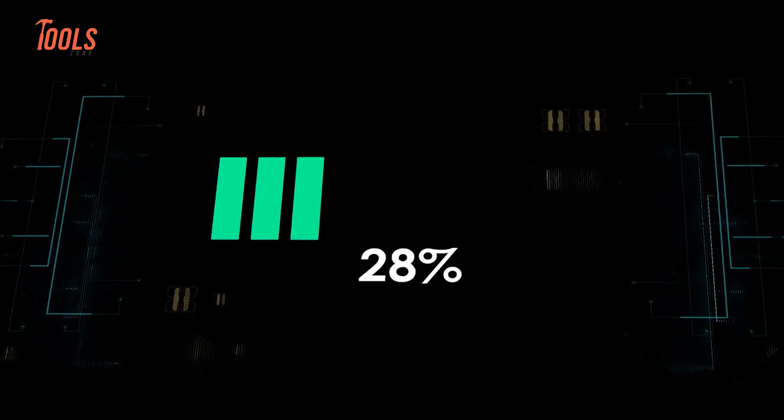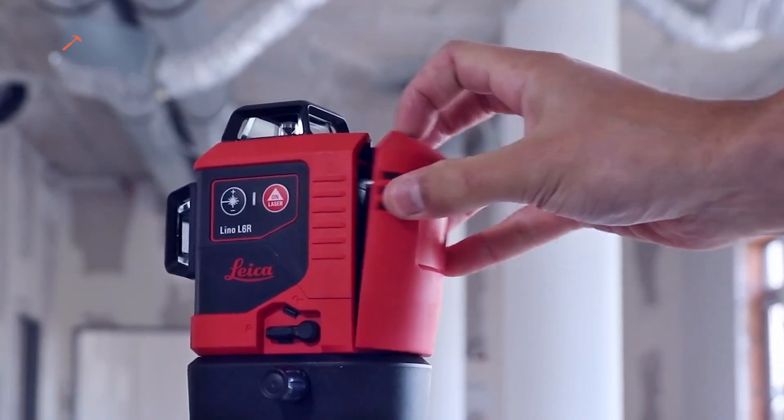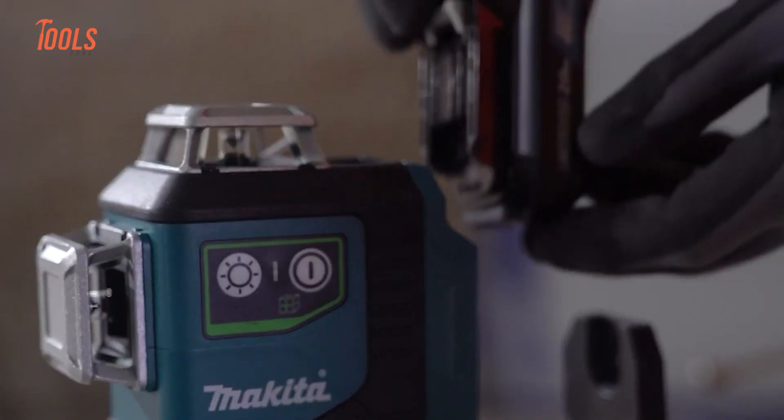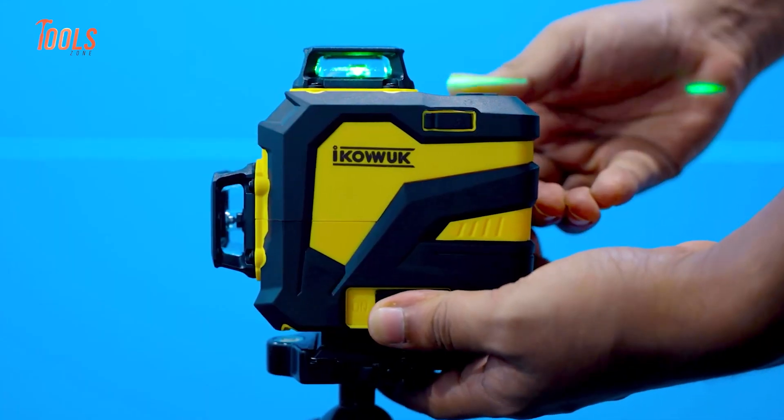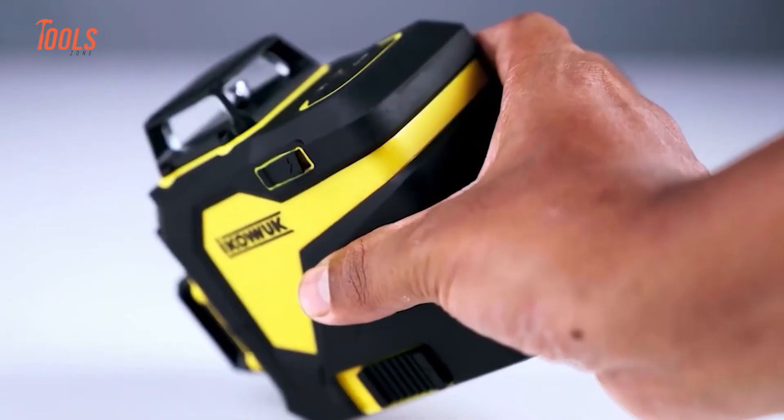Battery life is another area where the price difference becomes clear. The more affordable laser levels usually run on regular AA or AAA batteries, which are easy to replace but don't last very long. After a few hours of work, you might find the beam getting dim or the batteries running out.